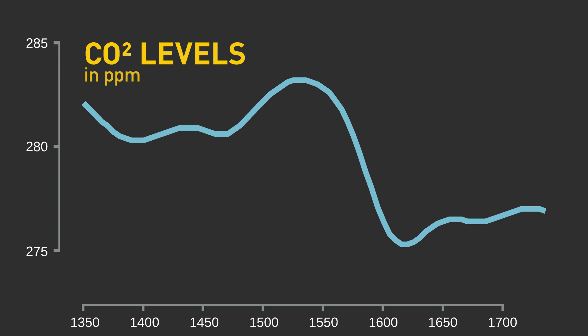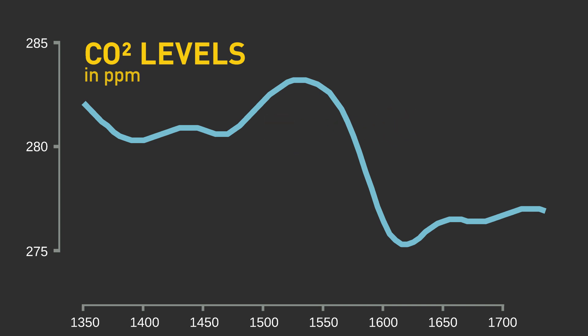This graph shows the historical levels of CO2 in our atmosphere, extracted from an Antarctic ice core. You can clearly see that there is a quite pronounced drop in global CO2 levels after the discovery of America in 1492. This drop also coincides with the coldest part of the Little Ice Age, with temperatures up to 1.5 degrees lower than today.